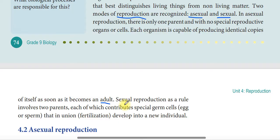When we come to the second mode of reproduction, that is sexual reproduction, it as a rule involves two parents, each of which contributes a special germ cell — egg or sperm. The combination between egg and sperm produces an offspring through a union, or fertilization, which develops into a new individual.